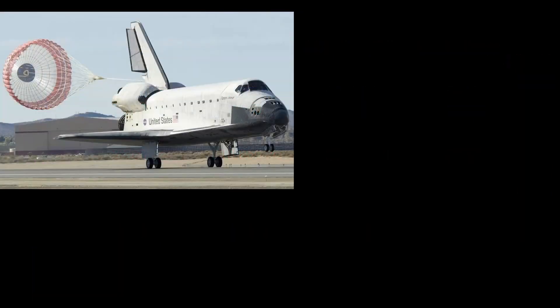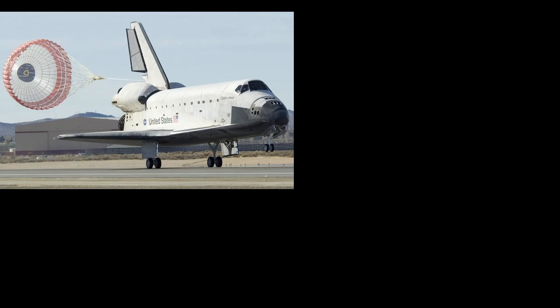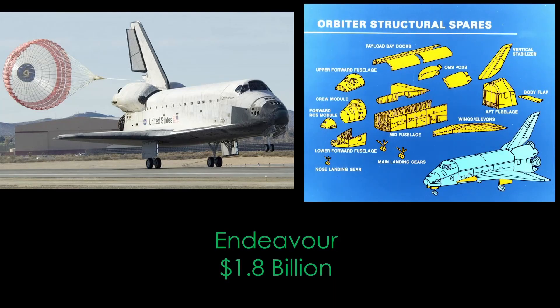Cost is also an important factor. When the Space Shuttle Endeavour was built in 1987 to replace Challenger, it cost 1.8 billion dollars, and it was only that cheap because there were a large number of structural spares left over from the construction of the original orbiters.